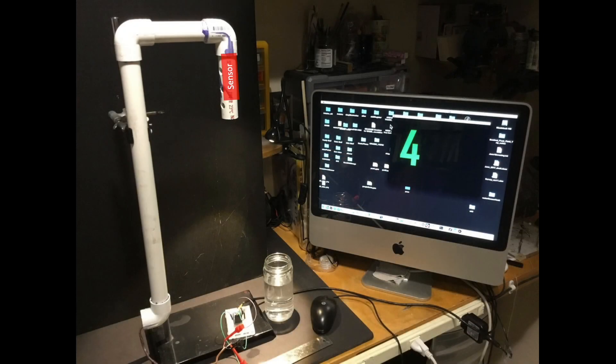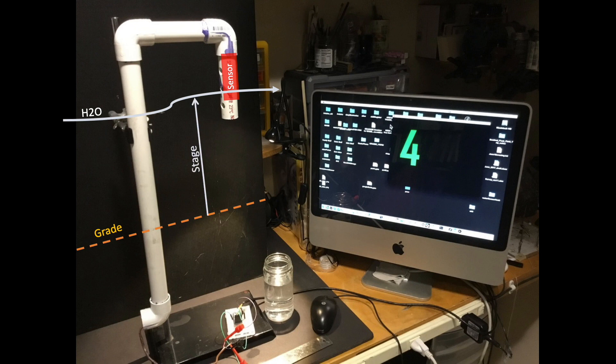PVC pipe is good because it can be used to elevate the sensor above grade so that telemetry can be initiated when flow occurs at a given stage. Next, I'll follow up with a quick demo of this setup and the respective analog response for these water sensors.